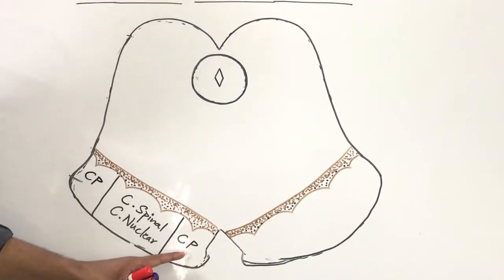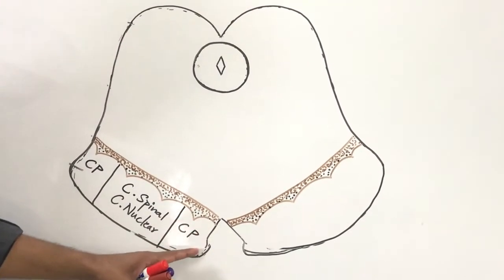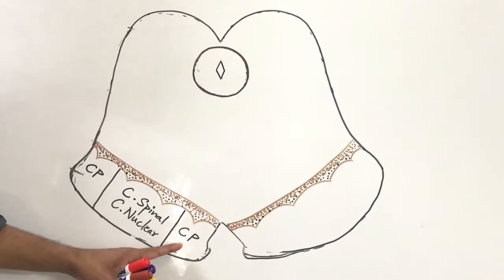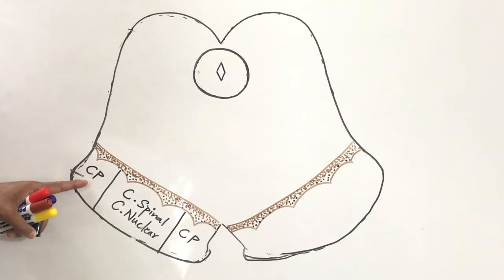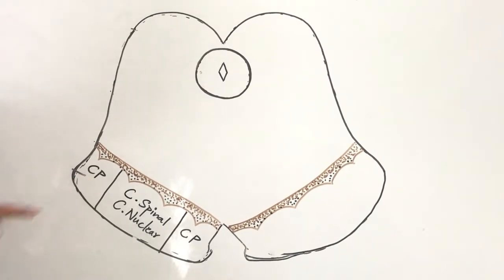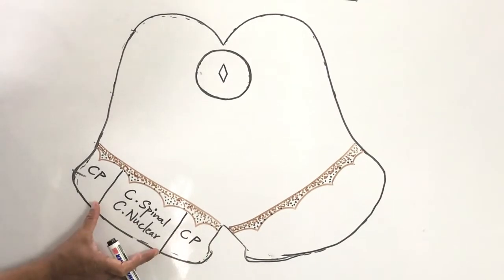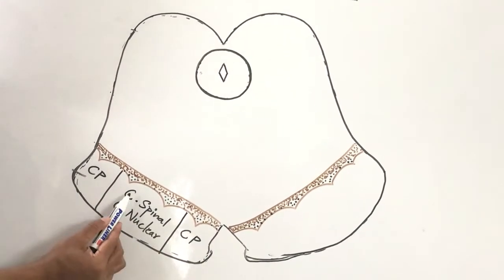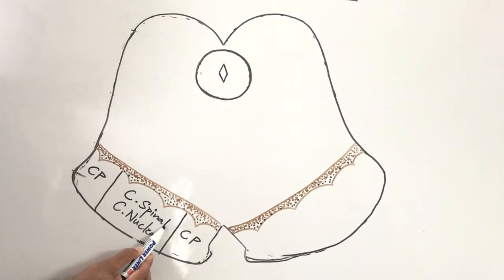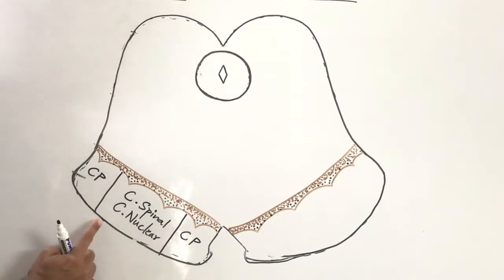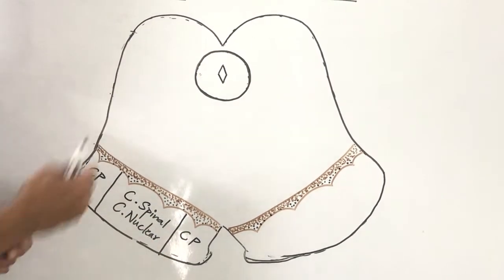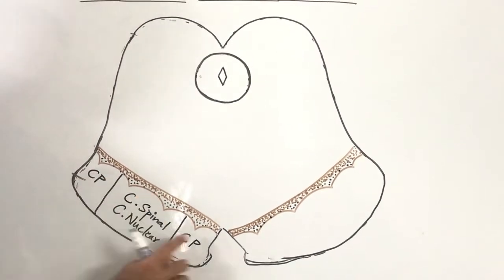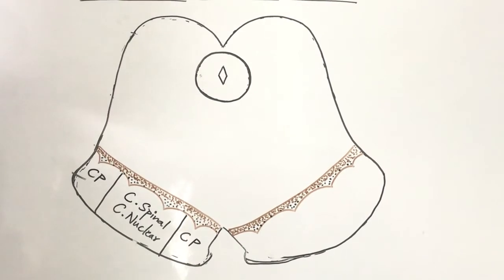The medial part carries frontopontine fibers from the frontal lobe, whereas the lateral-most part of the crus cerebrae carries parietopontine and temporopontine fibers from the parietal and temporal lobes. Remember: the center middle two-thirds of the crus cerebrae has corticospinal fibers (the pyramidal tract) and corticonuclear fibers. Traced superiorly, the crus cerebrae is continuous with the internal capsule; inferiorly, it is continuous with the basilar part of the pons.